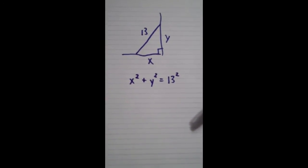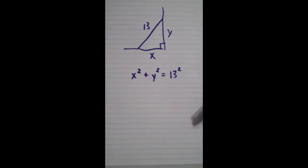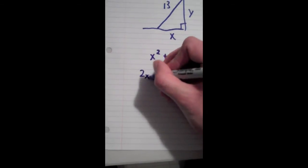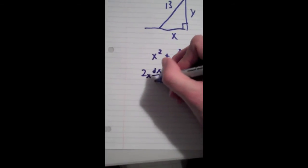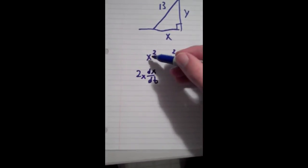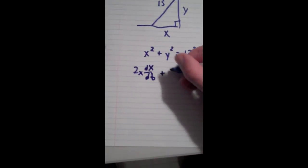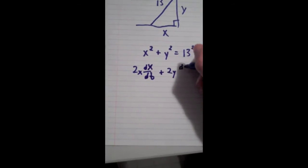So the next step is we take the derivative of both sides with respect to t. And so you get 2x dx/dt. Notice I'm using the chain rule there. I took the derivative of x squared with respect to x, and then took the derivative of x with respect to t.